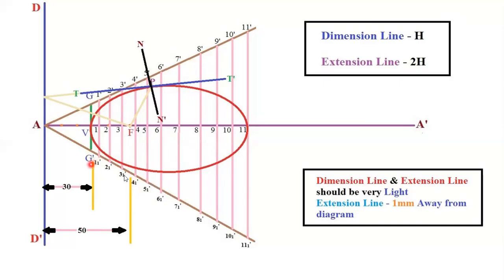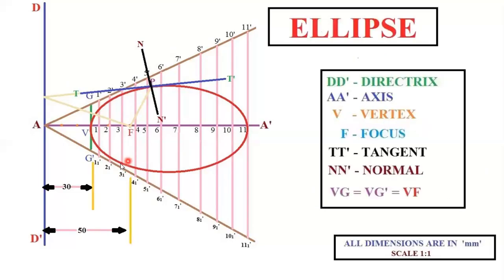Extension ends should be 1 mm away from the diagram. After completing your diagram, write the title 'ELLIPSE' with text height of 10 mm. Draw a horizontal guideline lightly, write the wording legibly, and put a box around it. Keep the heading centered to the middle of the diagram above.